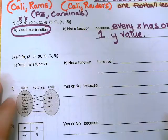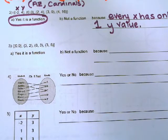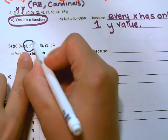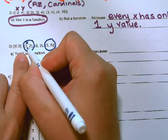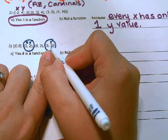Let's try another example here. It wants to know if it's a function. We're going to look, does every X have one Y? When I look at this problem right here, I see that when X is 3, it has a Y value of 2 and it has a Y value of 5.